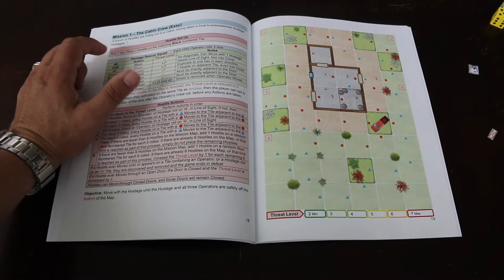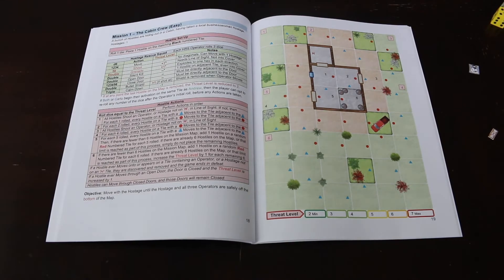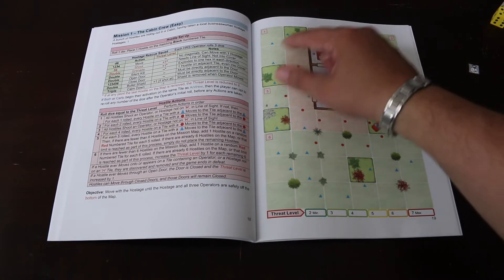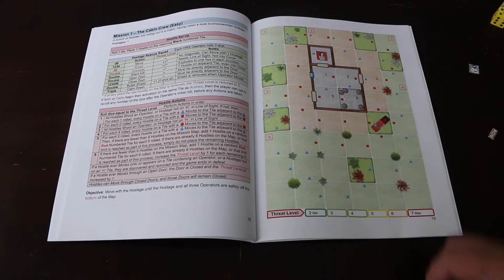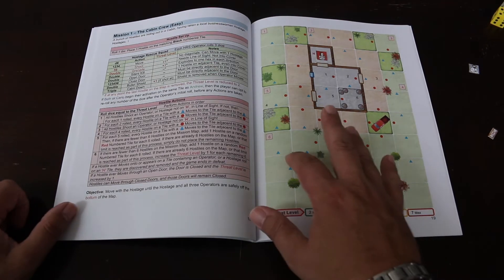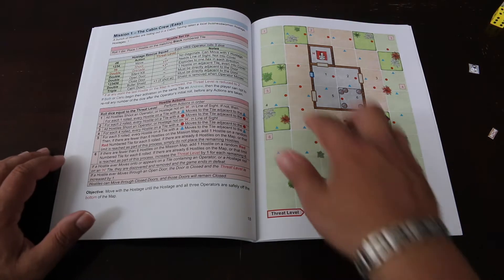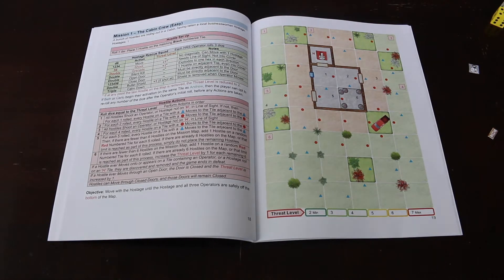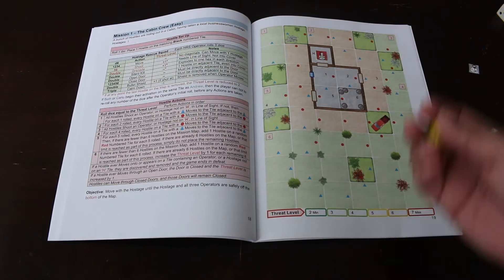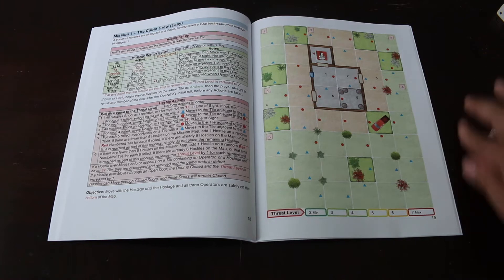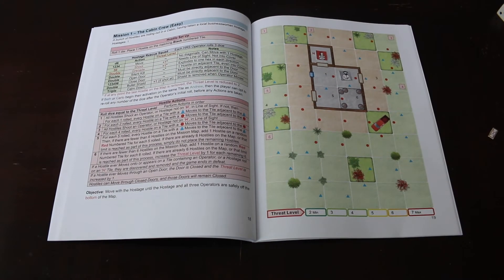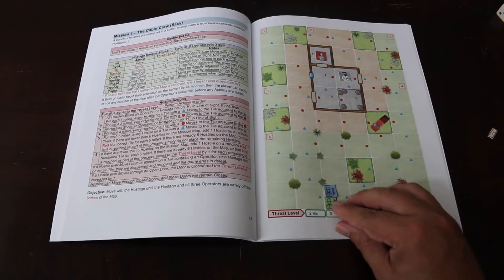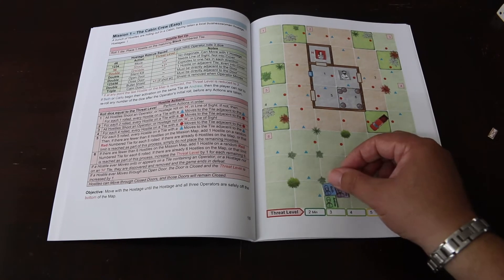A bunch of hostiles are hiding out in the cabin having taken a local businesswoman hostage. Let's place the hostage - she goes in the square here with the H. That's a window there, these are doors. These different colored green things here are all terrain which can block stuff. Terrain that doesn't block is always in a corner. These blue triangles and red circles are used to help the AI move the terrorists around the map. Roll one die and place one hostile on the matching black number tile. I rolled a two, so black two is right here.